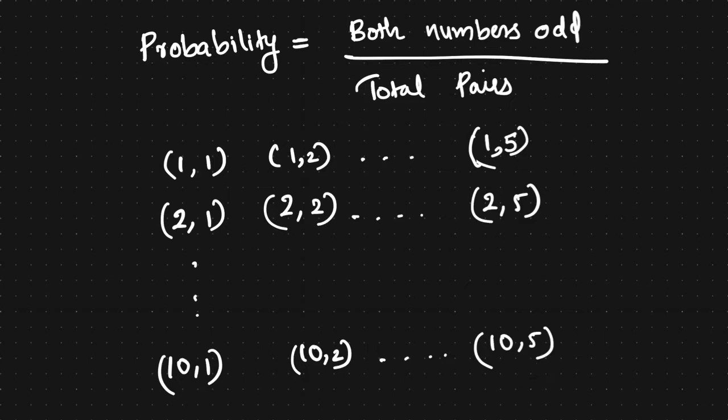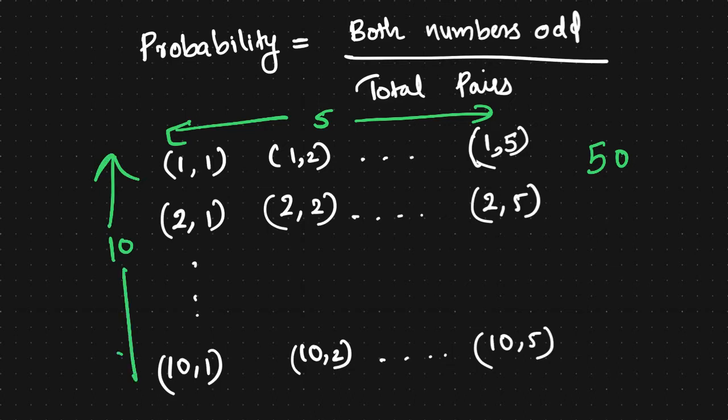In this case we can list all combinations from (1,1) up to (10,5) using different combinations to find the total number of pairs. We can use the grid to calculate: we have 5 columns and 10 rows, so 5 times 10 equals 50.